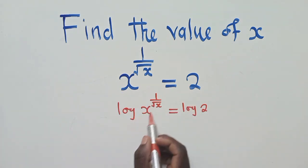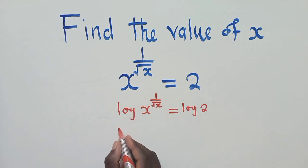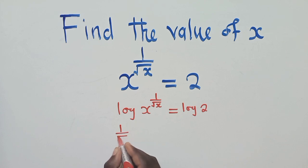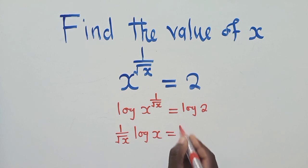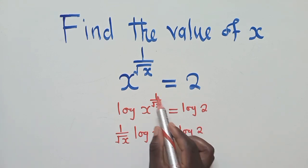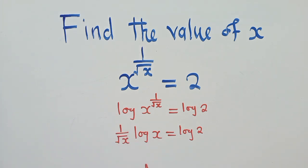What the log does to the power here is bring it in front. That's one of the uses of logs — it brings the power in front. So what we have is log x over root of x, which is equal to log 2.